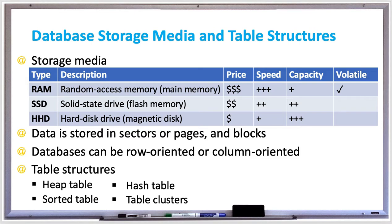A sorted table is a table sorted by a specific column, typically the primary key column, which determines the row order. The table's rows are assigned to blocks based on the value of the sort column, and each block contains a range of sorted rows based on the columns they're sorted by. Sorted tables are great for queries that read the data in order of the column that it's sorted by.